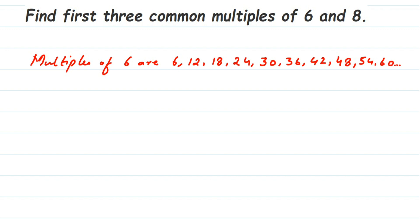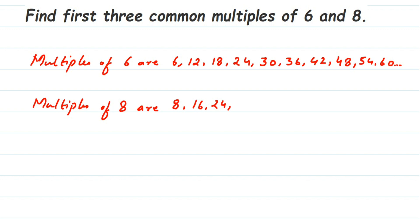Next, let's write down the multiples of eight — the eight times table. Eight ones are eight, eight twos are sixteen, eight threes are twenty-four, eight fours are thirty-two, eight fives are forty, eight sixes are forty-eight, eight sevens are fifty-six, eight eights are sixty-four, eight nines are seventy-two, eight tens are eighty, and so on.